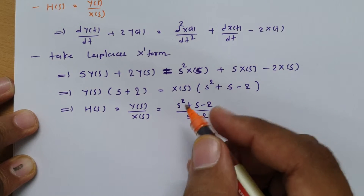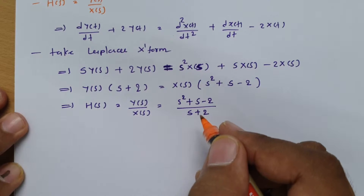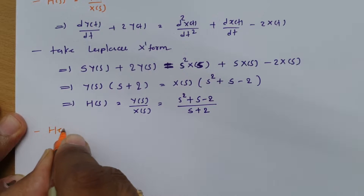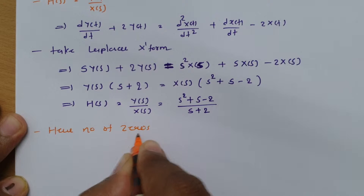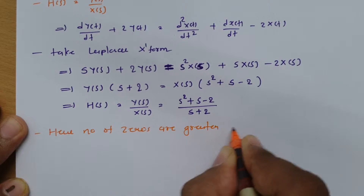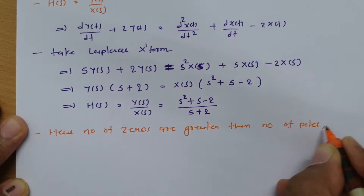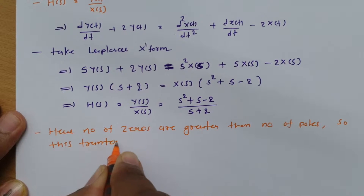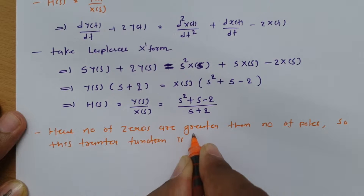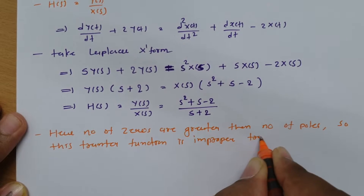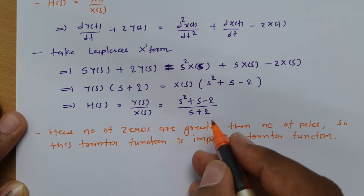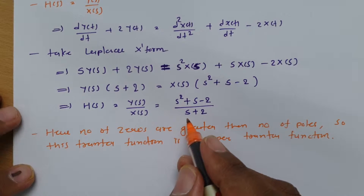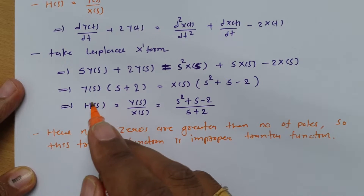Now, stability and causality are a different matter. From observation of this transfer function, one can see that the number of zeros is greater than the number of poles. So this transfer function is an improper transfer function. For an improper transfer function, we cannot directly identify causality and stability. We need to take the inverse of this transfer function and then check stability and causality of that.